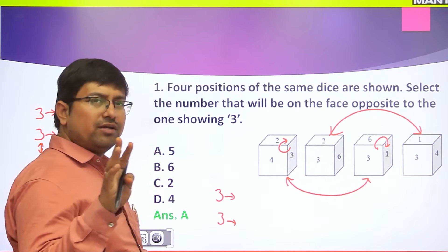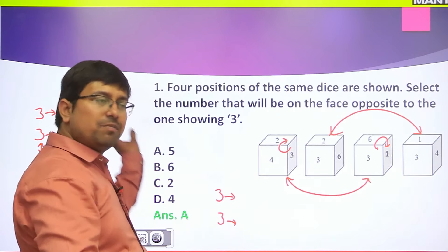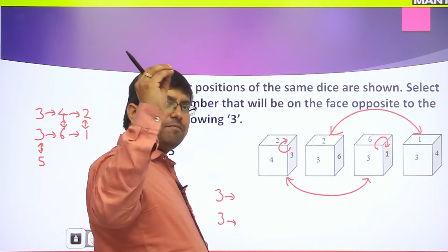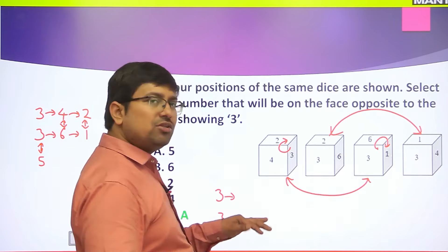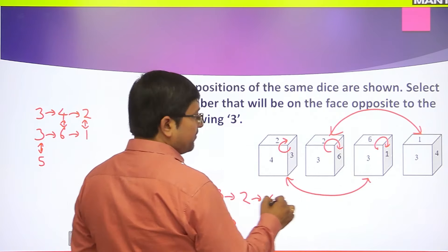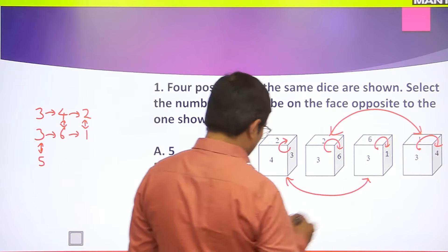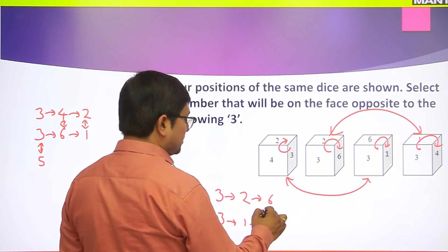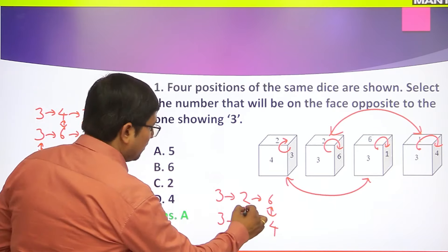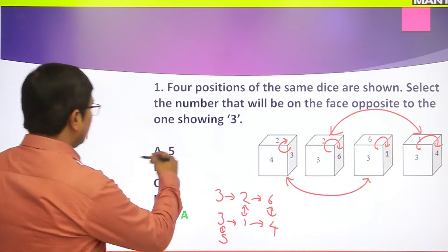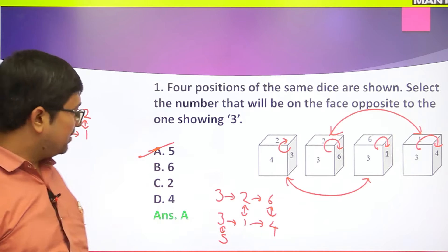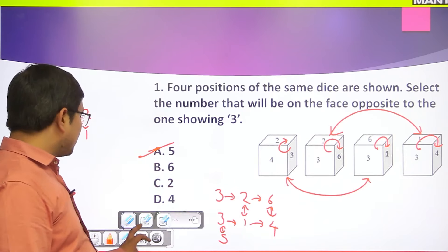Go clockwise in both images - it doesn't matter if you go anticlockwise as long as you go the same direction in both; the answer will be the same. The key rule: start from the common face, which is 3, and go clockwise in both. From 3 → 2 → 6, and the opposite of 3 is 5, which I already told you. This is how you answer this type of question.